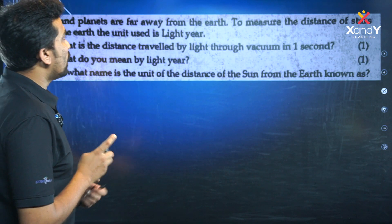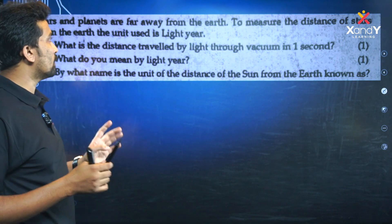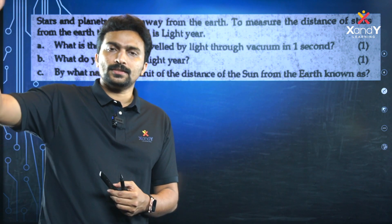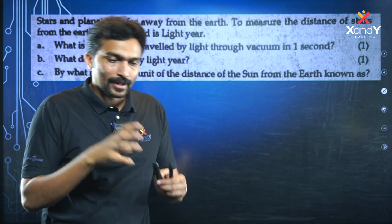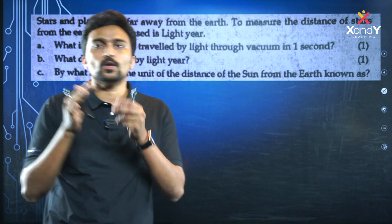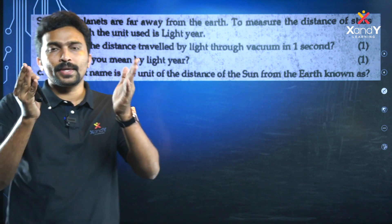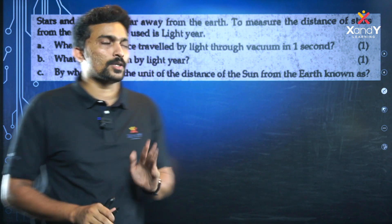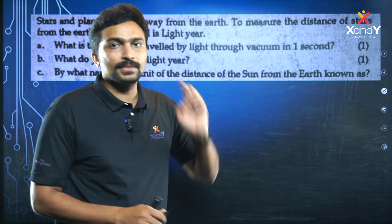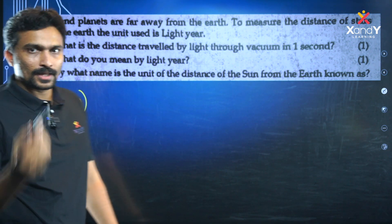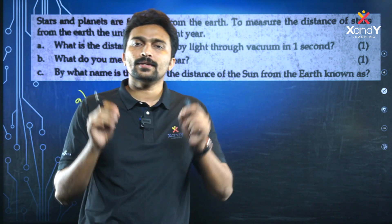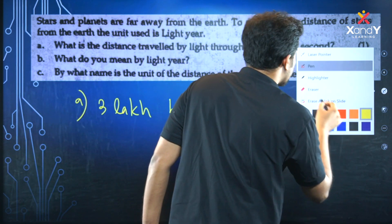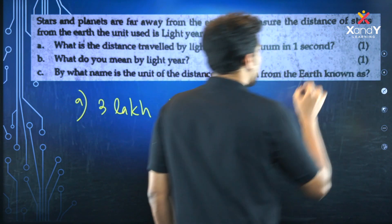Next: Stars and planets are far away from the Earth. To measure the distance of stars from the Earth, the unit used is the light year. Stars are at very large distances, and the closest star is still at an enormous distance. The speed of light is 3,000,000 km per second.